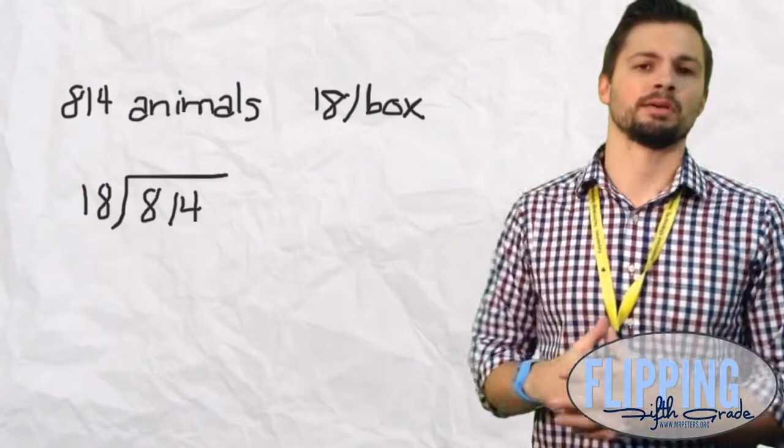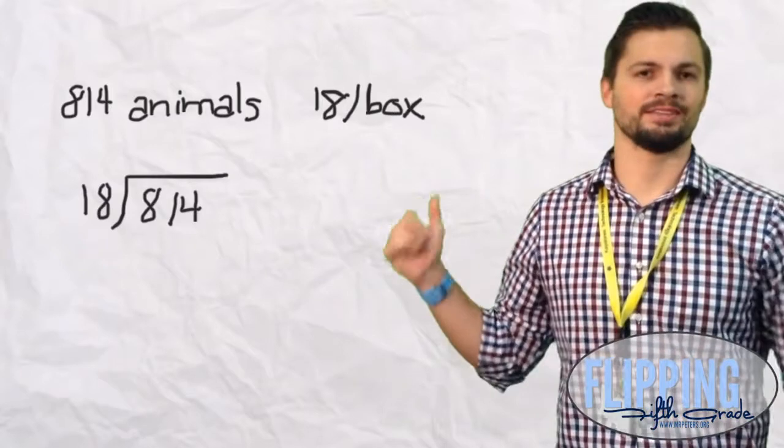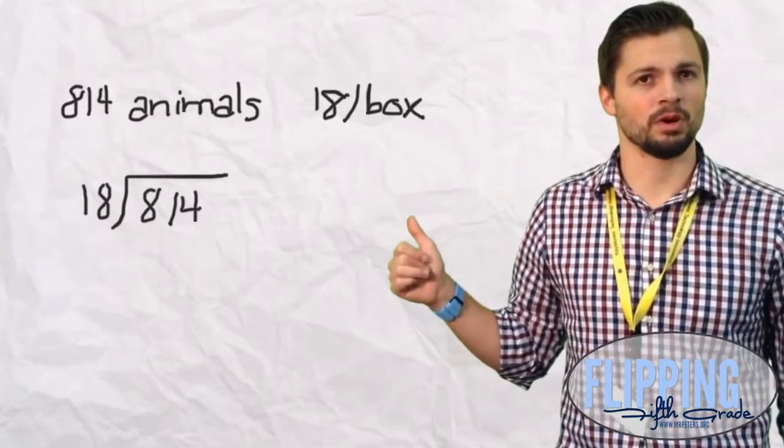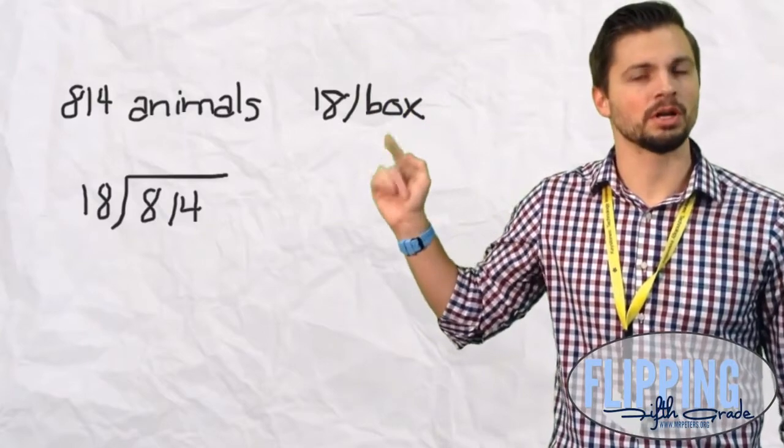So now let's go back to the real problem. 814 divided by 18. So we already said that 18 doesn't go into 8 but it does go into 81. What's that first digit we found? It was a 4. So we're going to put that up top.